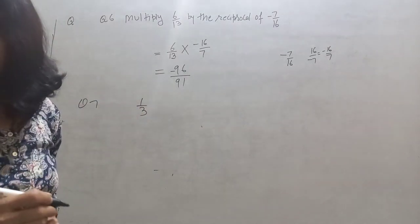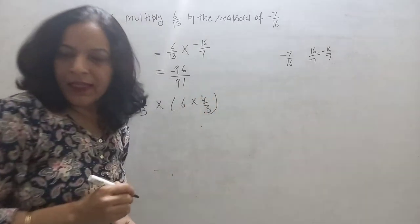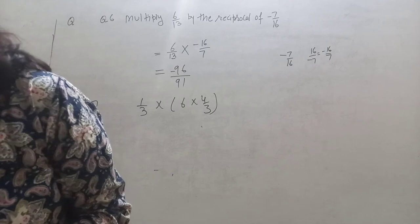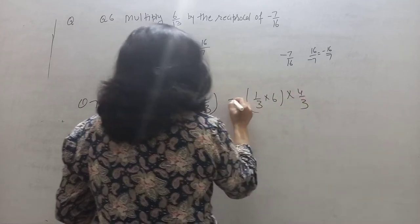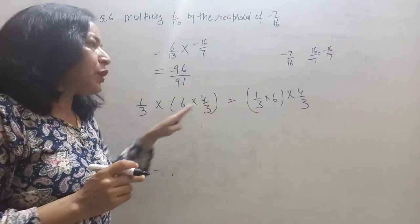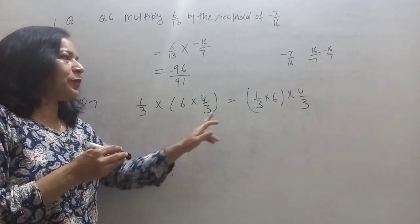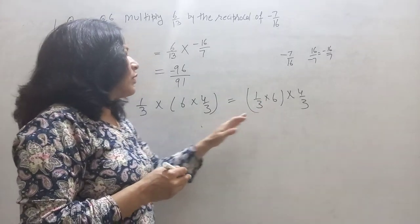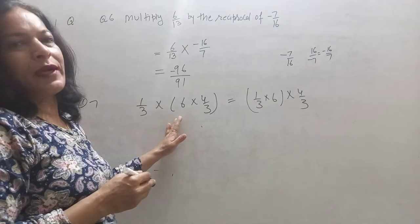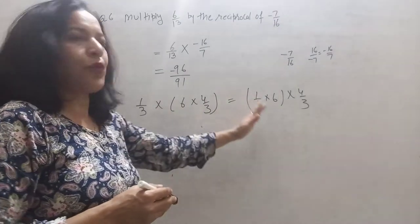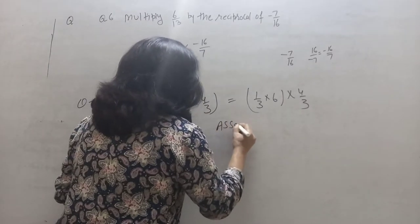Question number 7: 1 upon 3 into 6 into 4 upon 3. The question asks what property allows you to compute this as 1 upon 3 into 6, then into 4 upon 3. Since changing the grouping gives the same answer, the property used here is the associative property.